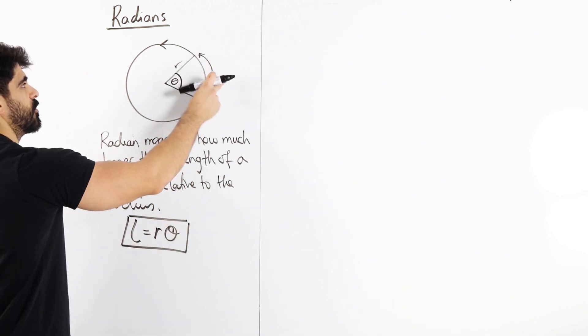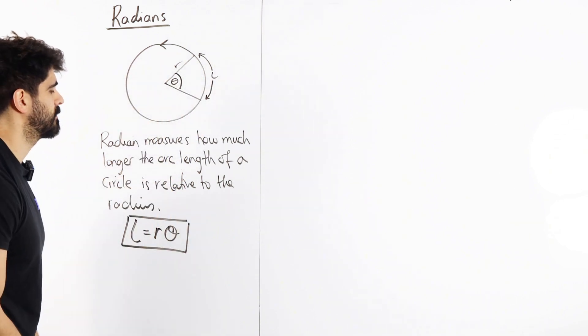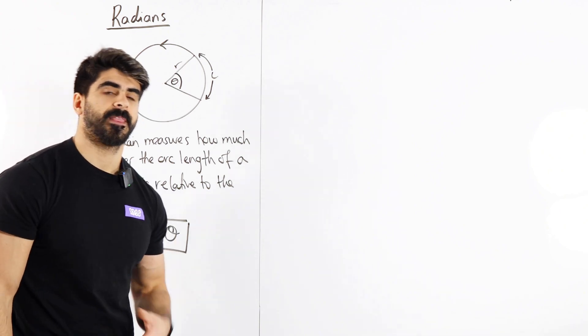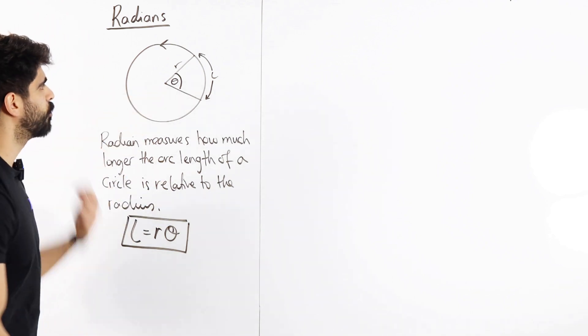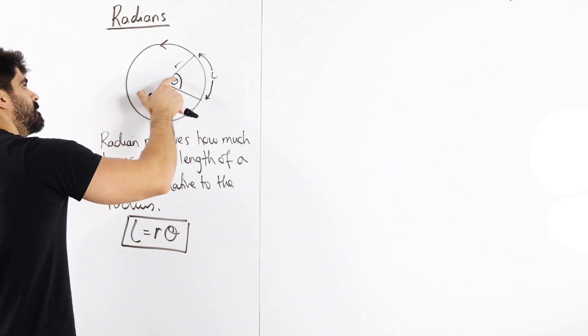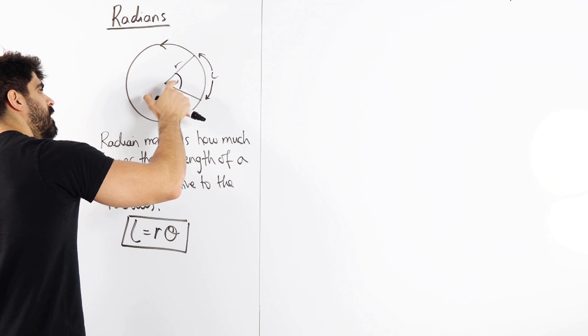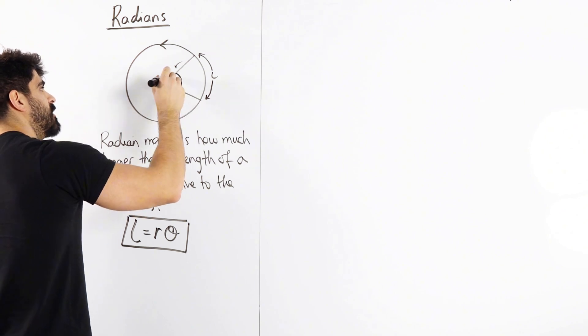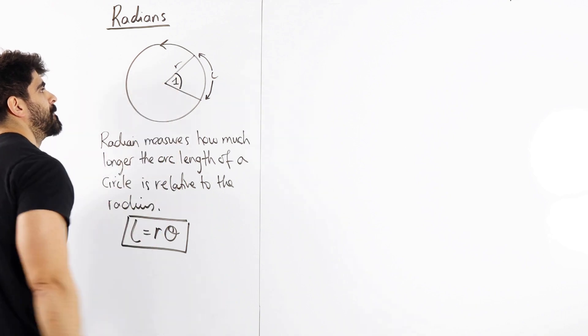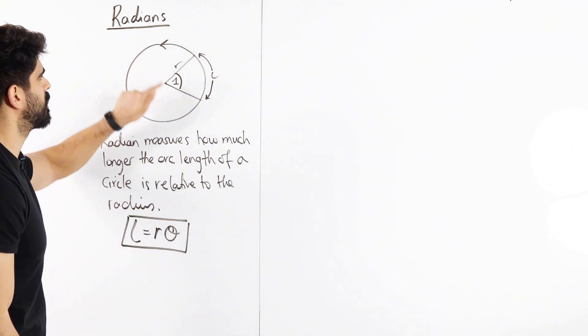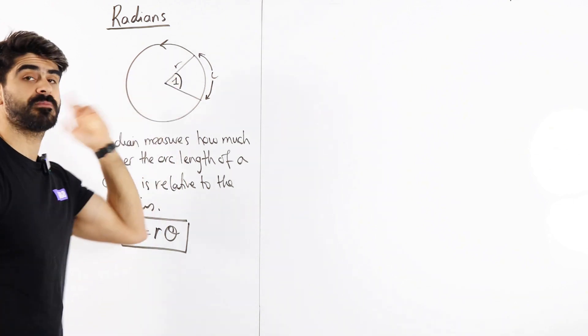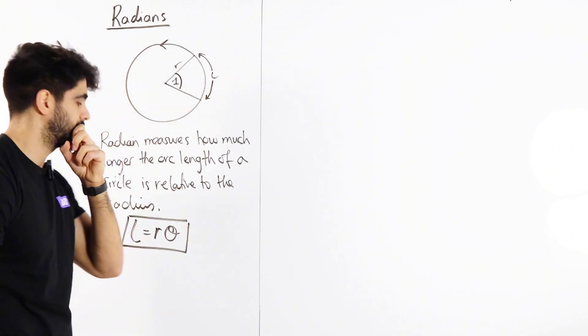If that's four, this is two, this is two. Then what's interesting is if the angle here was one, what would that mean? If I made this one, what does one radian even mean? One radian basically says one times r is L, which just means that the radius is equal to the arc length.